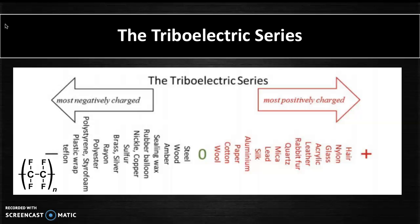Therefore, we can predict that materials on the negative side will strip electrons from materials on the positive side. The materials are ranked from top to bottom or from left to right, and the farther apart two materials are on the series, the greater the charge will be on the material after it is rubbed against another material that is spaced far apart from it.